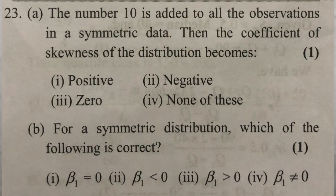The number 10 is added to all observations in symmetric data. Then the coefficient of skewness of the distribution becomes — we focus on what happens to all observations.